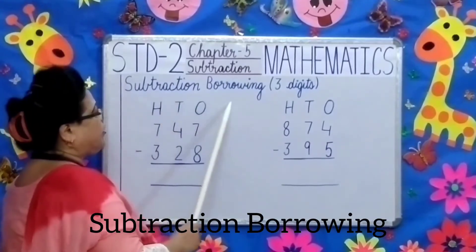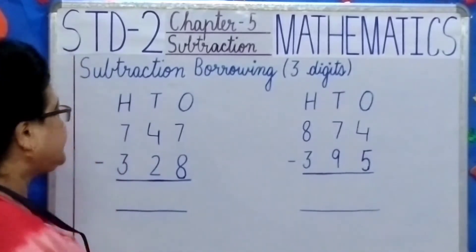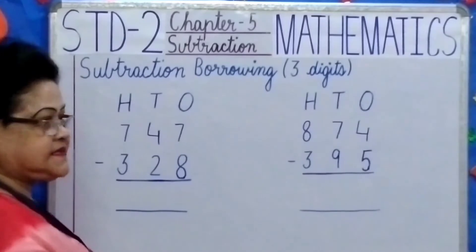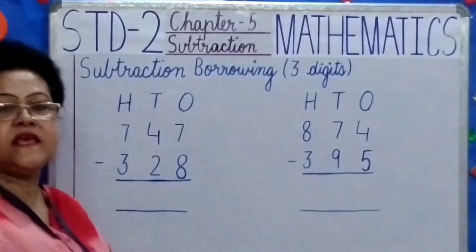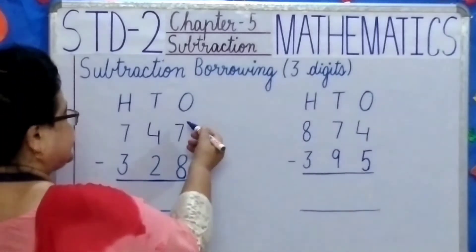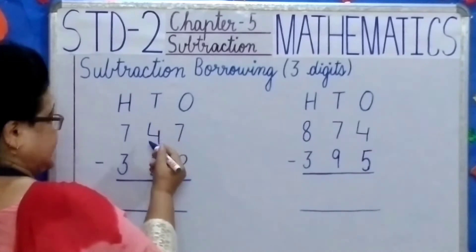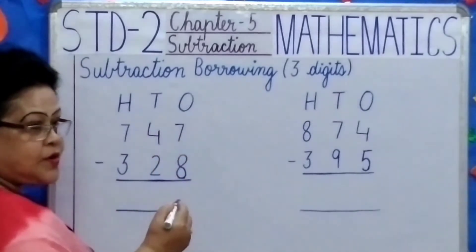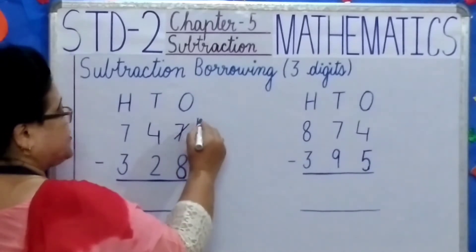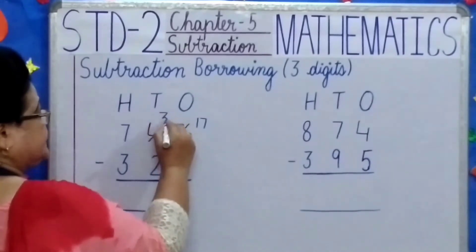Moving on to the next topic: subtraction with borrowing, three digits. Children, can you see two sums on the board? The first one: 747 minus 328. Now, come to the ones place. Since 7 is smaller than 8, we have to borrow from the tens place. We will borrow one from the tens place. This will become 17 ones and this will become 3 tens.